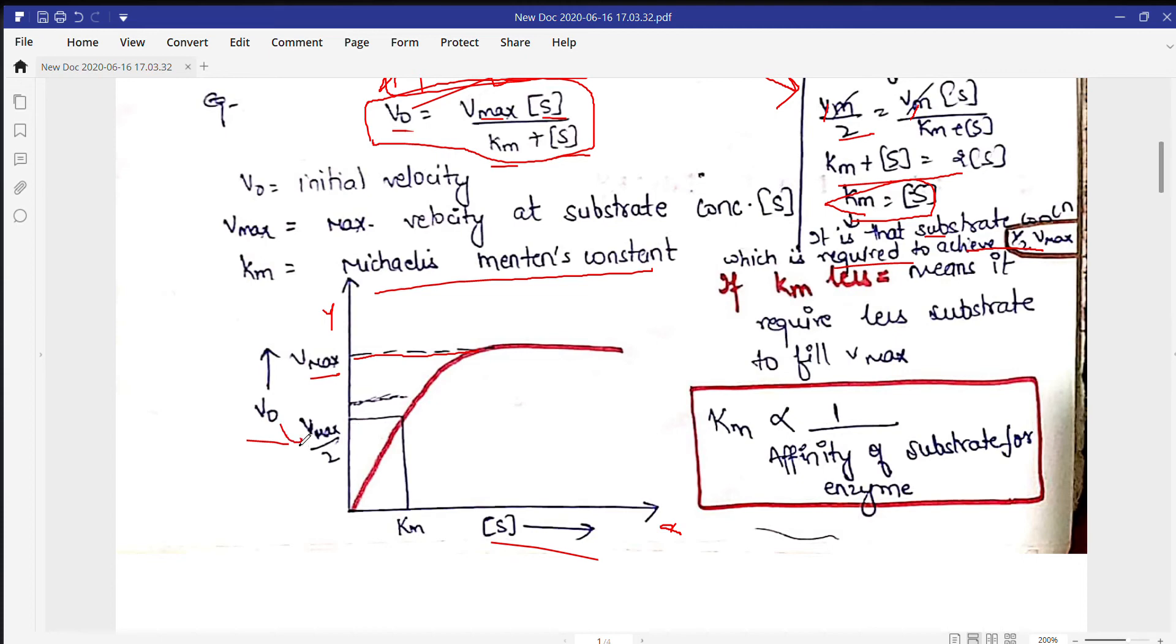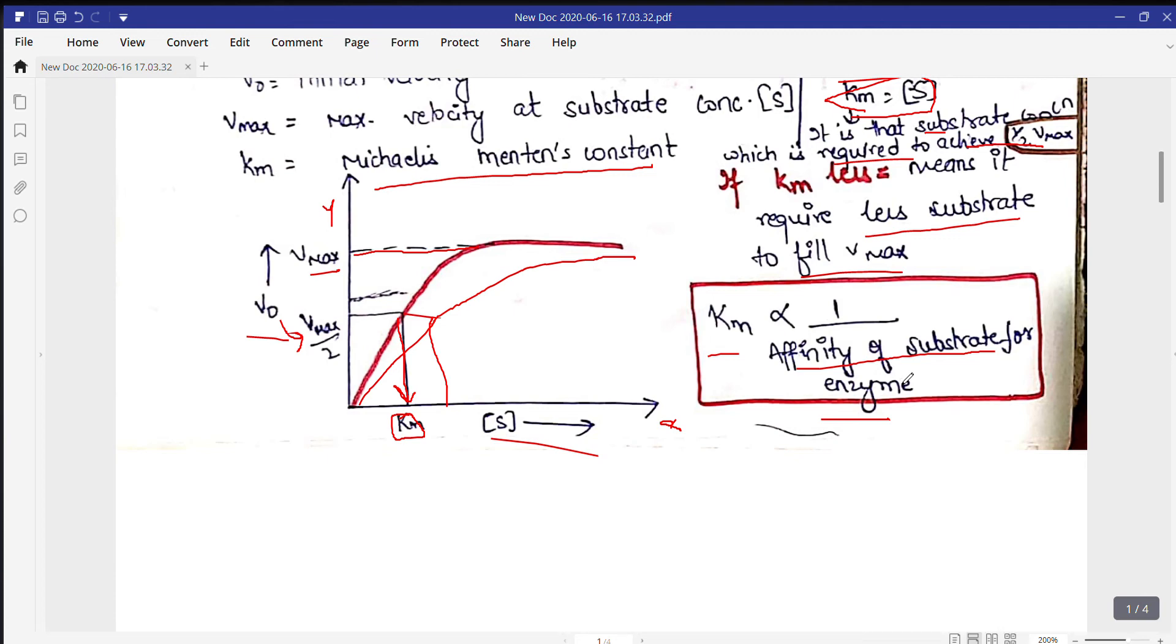Now, if V0 is Vm/2, when Vmax is half, at that time we can determine the Km. I told you the definition. Now this is Km. If the reaction takes like this, if the Km will be more, then the reaction will take more time to reach Vmax. By this we can define that Km is indirectly proportional to the affinity of the substrate for enzyme. That means if Km is more, the affinity of substrate for enzyme will be less. When we want an enzyme to be more efficient, we need Km to be less. If Km is less, it requires less substrate to reach Vmax and it will be helpful in the reaction. So remember, Km is indirectly proportional to the affinity of substrate for enzyme.